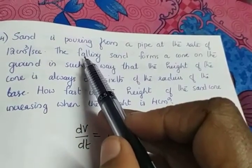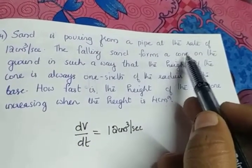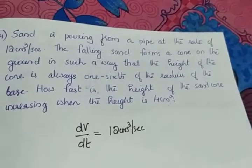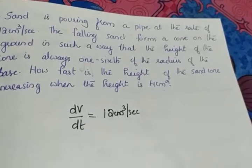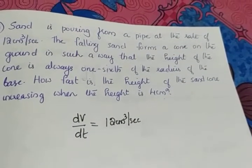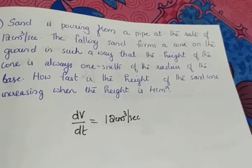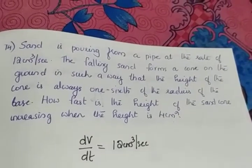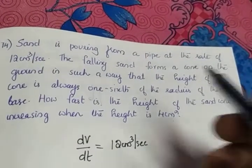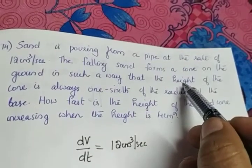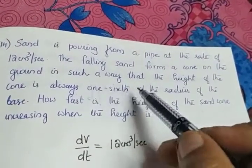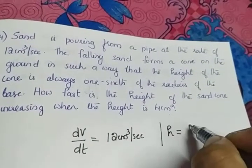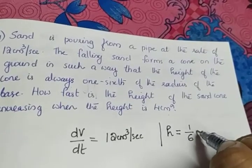The second sentence tells us the shape: the falling sand forms a cone where the height is always 1/6th of the radius. A cone has a height h, a radius r, a circular base, and a point at the top — so there are two dimensions, r and h. The relation between them is h = (1/6)r.